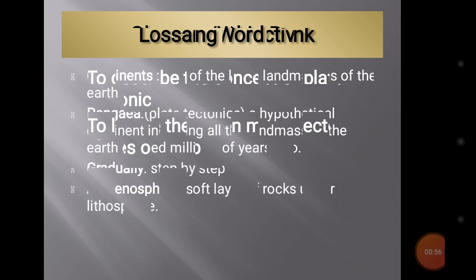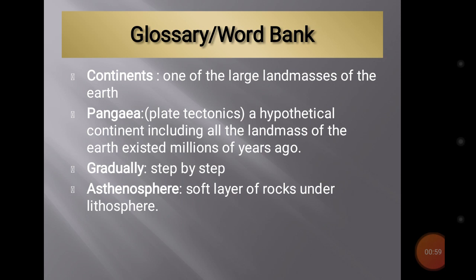Before proceeding to our lesson we will discuss some important terms. Continents: one of the large land masses of the Earth — a huge, big portion of the Earth. Pangaea: a hypothetical continent including all the land masses of the Earth that existed millions of years ago. Millions of years ago all the continents were present in a combined form, forming a huge continent called Pangaea. Gradually, meaning doing something in steps.